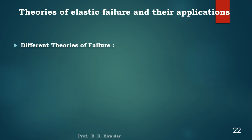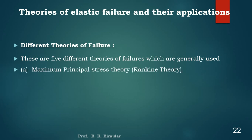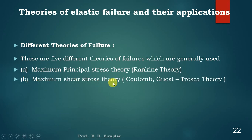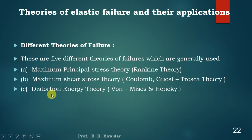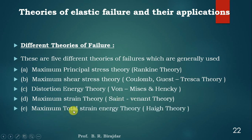There are different theories of failure, but the five major theories which we generally use are: one, maximum principal stress theory, which we can call the Rankine theory; two, maximum shear stress theory, also called the Coulomb or Tresca theory; three, distortion energy theory, also called the von Mises or Henky's theory; four, maximum strain theory, also called the St. Venant theory; and five, maximum total strain energy theory, also called the Haigh theory.